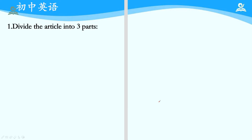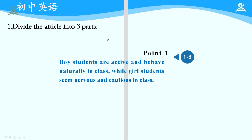Now we are going to read an article titled 'Prove Ourselves.' You need to go to the handout and finish the exercise. The first task is to divide the article into three parts. Paragraph 1 to 3 form the first group. The main idea is: boy students are active and behave naturally in class, while girl students seem nervous and cautious in class. That is the result of the author's observation — the difference in personality between girls and boys.